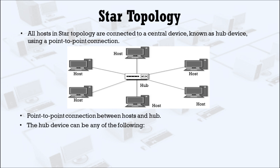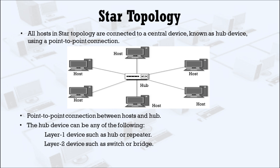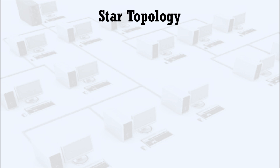The central device can be a hub or repeater, which are layer 1 devices that work on the physical layer; a switch or bridge, which are layer 2 devices that work on the data link layer; or a router or gateway, which are layer 3 devices, also called network layer devices.